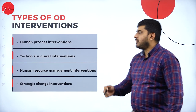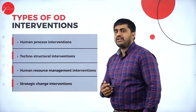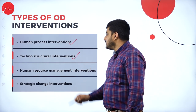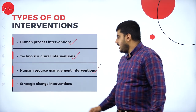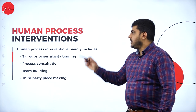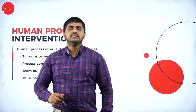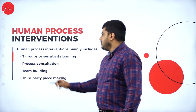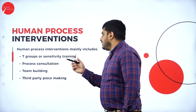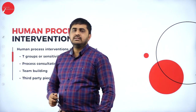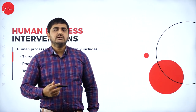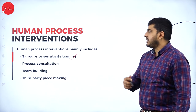Types of OD interventions — there are four different types. The first is human process interventions. Human process interventions mainly include T-group or sensitivity training, where you conduct certain sensitivity training, identify the various problems, and give certain training to employees so that they alter their behavior towards the organizational goal.